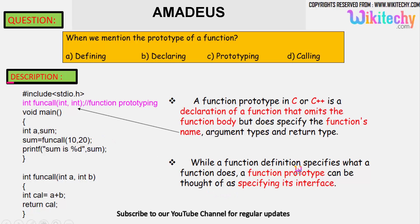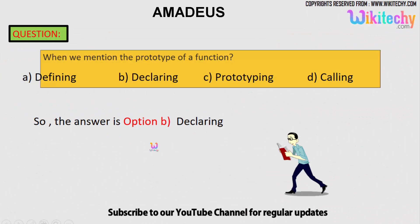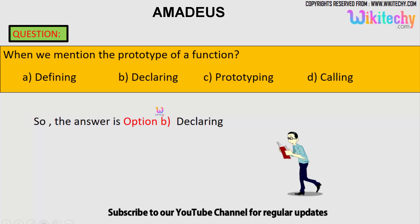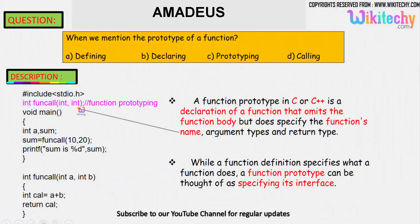While a function definition specifies what a function does, a function prototype can be thought of as specifying its interface - the nature of the function. The option is declaring. It's not defining because this is the definition.